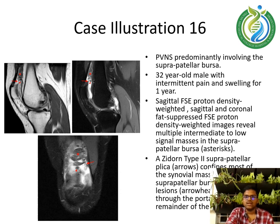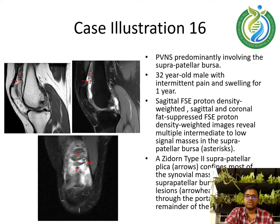Case illustration 16: PVNS predominantly involving the suprapatellar bursa. A 32-year-old male with intermittent pain and swelling for one year. Sagittal FSE proton density weighted and sagittal and coronal fat-suppressed FSE proton density weighted images reveal multiple intermediate to low signal masses in the suprapatellar bursa shown by the asterisk. A Zidane type 2 suprapatellar plicae shown by the arrow confines most of the synovial masses to the suprapatellar bursa, but smaller lesions shown by the arrowheads can pass through the porta into the remainder of the joint.